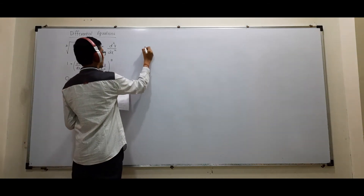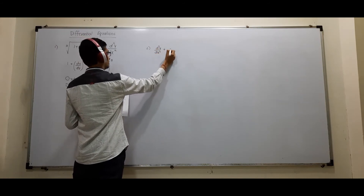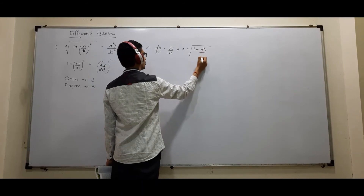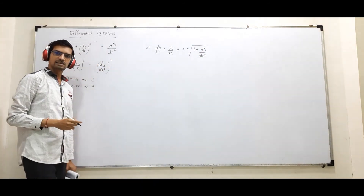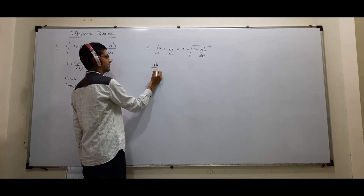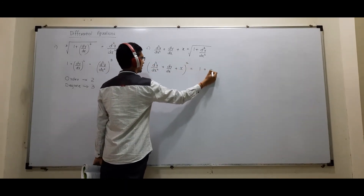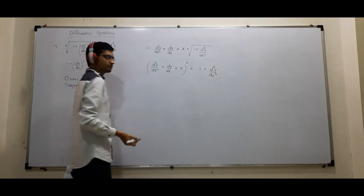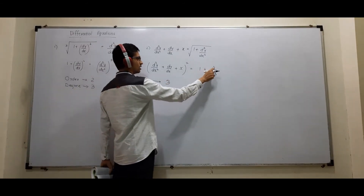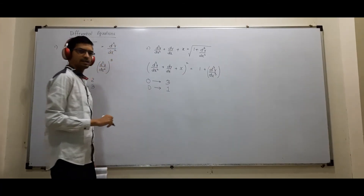Next problem: d²y/dx² + dy/dx + x = √(1 + d³y/dx³). The third derivative is under a radical sign, so I square both sides: (d²y/dx² + dy/dx + x)² = 1 + d³y/dx³. Now the order is 3 because of the third-order derivative, and the power of that highest-order derivative is 1, so degree = 1.